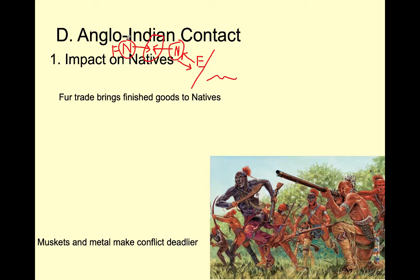As both native groups—whether allied with the French or the English—acquired more modern weapons like muskets and metal tomahawks, intertribal violence became more deadly. In the past they had fought with Stone Age tools, but now they had far more advanced weapons. Deaths and conflicts increased. They were changing their environment, which eventually led to starvation and increased conflict, decimating native tribes because of their alliances with the various European powers that came in.